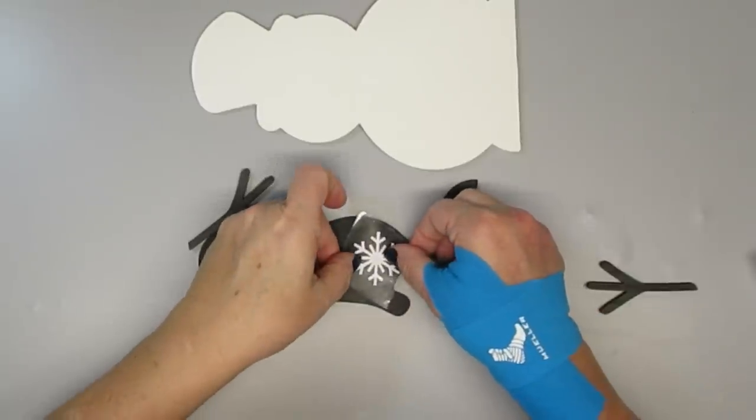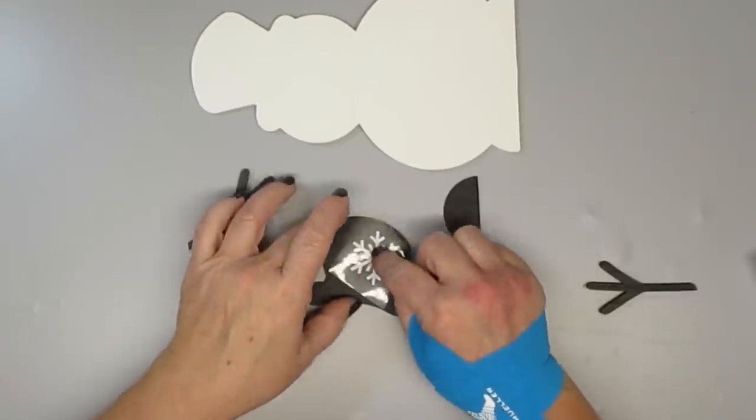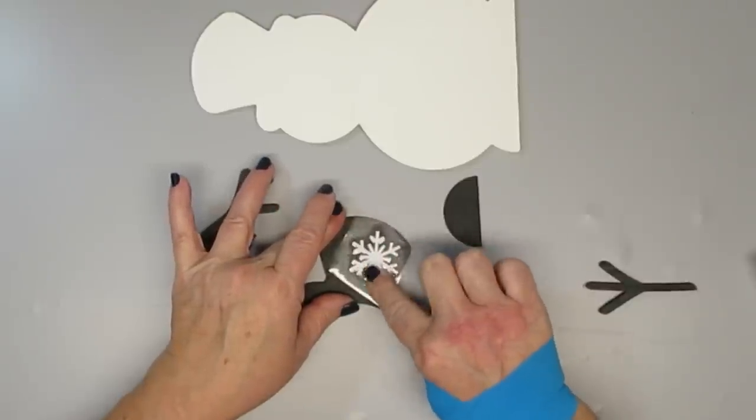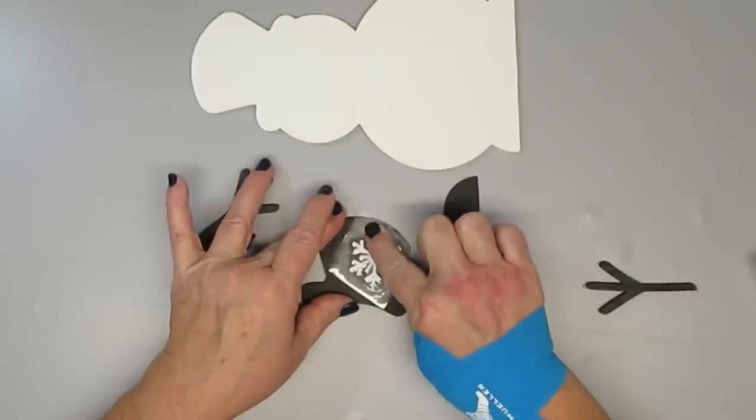Using my Cricut I cut out a snowflake using some white vinyl. This will also be part of the craft kit along with the base piece.